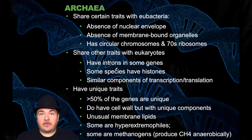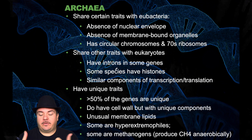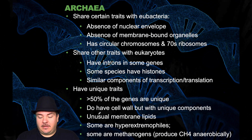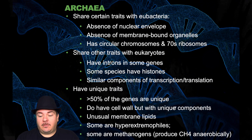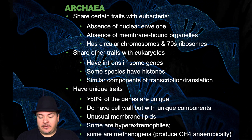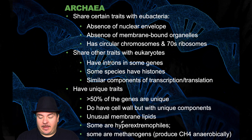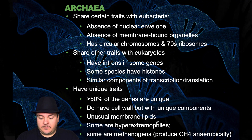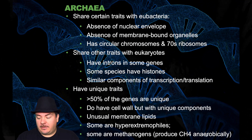Archaea also have unique traits, because they're not bacteria or eukaryotes. More than half of their genes are unique. They do have a cell wall, but it has unique components, made out of different pieces than the cell wall of plants, eukaryotes, or bacteria. They have unusual membrane lipids. Some are extremophiles, living in environments other organisms couldn't survive. And some are methanogens — they produce methane anaerobically.